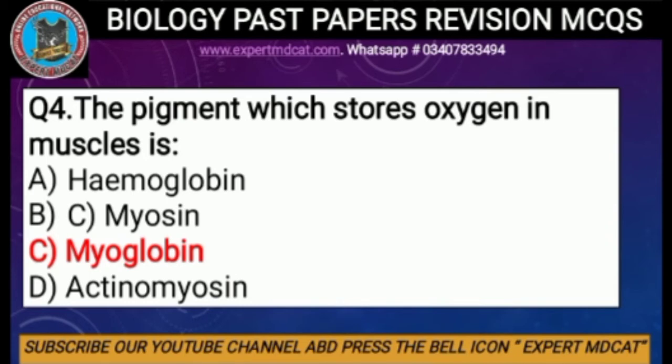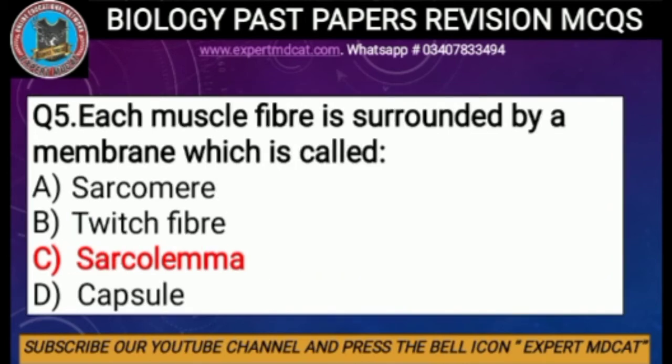Question number four: the pigment which stores oxygen in muscles is called myoglobin, because 'myo' means muscle and 'globin' means oxygen-carrying. It is a hemoprotein that receives oxygen from hemoglobin and stores it in the tissue until needed. The correct option is C, myoglobin.